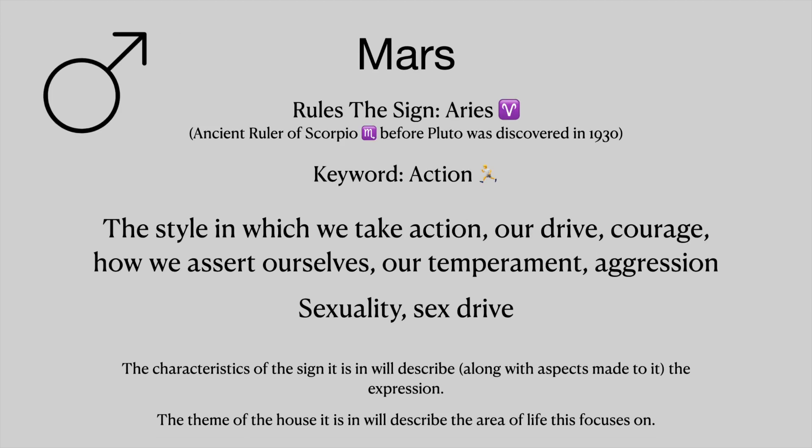Mars rules the sign of Aries — it was also the ancient ruler of Scorpio before Pluto was discovered in 1930. The keyword is action. This is the style in which we take action, our drive, our courage, how we assert ourselves, our temperament, and it can describe aggression. This is also sexuality and sex drive. The characteristics of the sign it is in will describe, along with aspects made to it, the expression, and the theme of the house it is in will describe the area of life this focuses on.